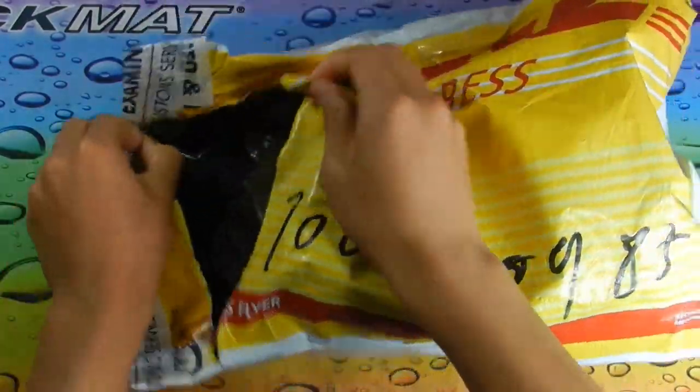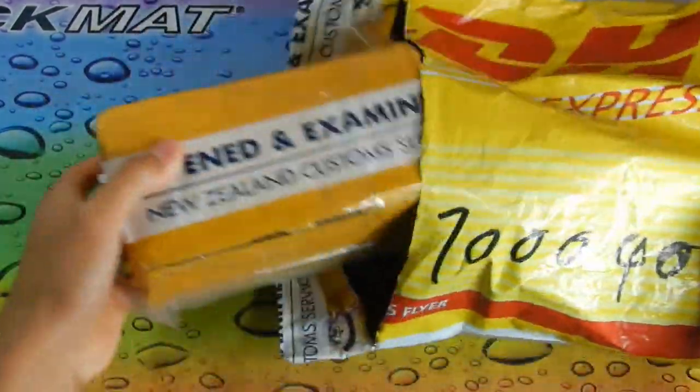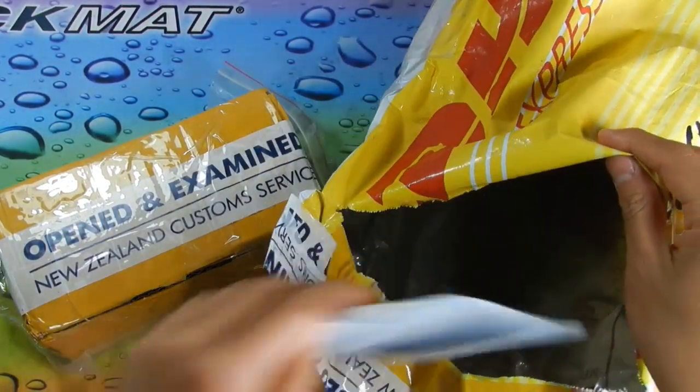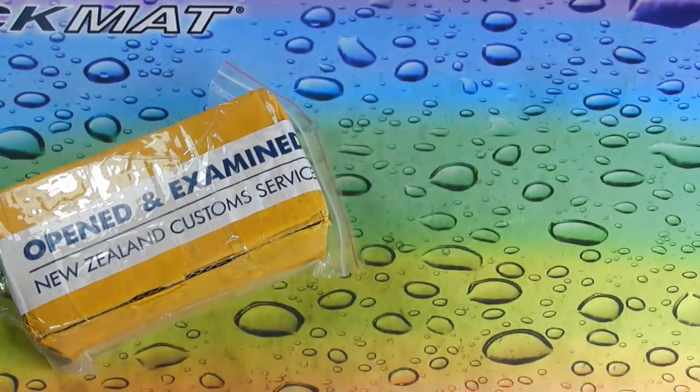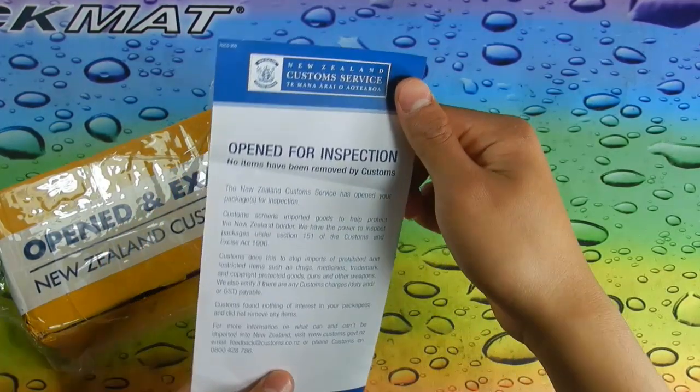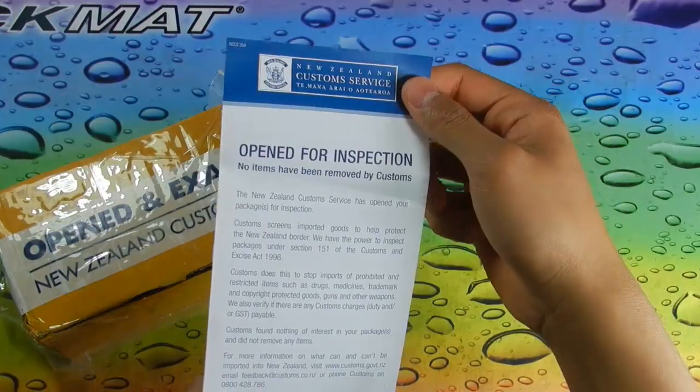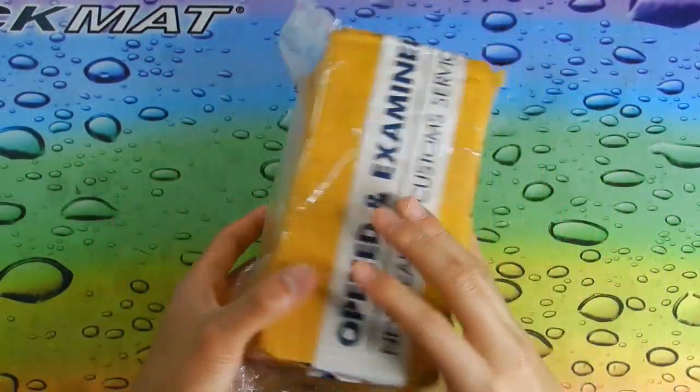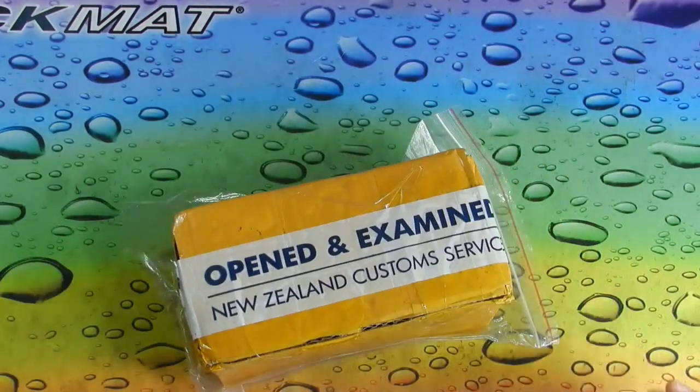So they used DHL shipping for this. Okay, so there's nothing, oh there's a slip in here. Oh right, so there is something from Customs, no items have been removed, so it's good. So it's open as well. I wonder why they did that. I don't know, okay, let's open it up.